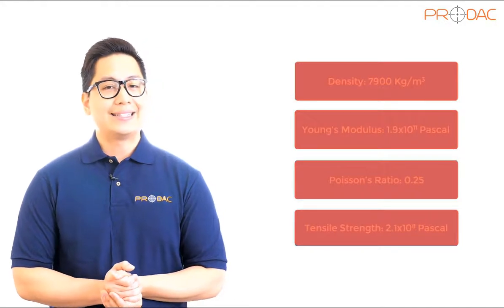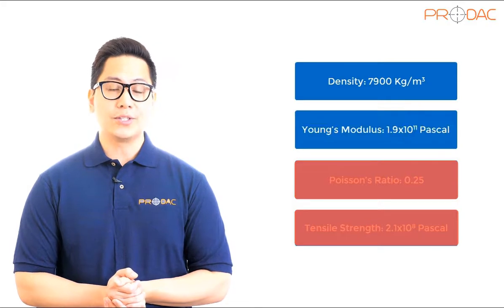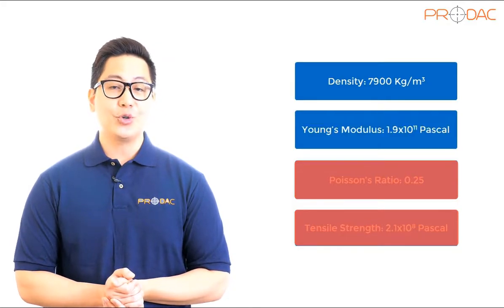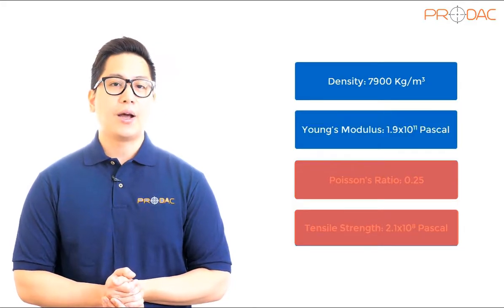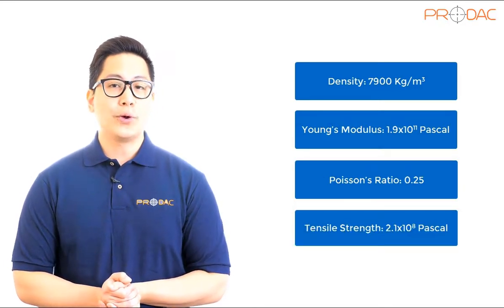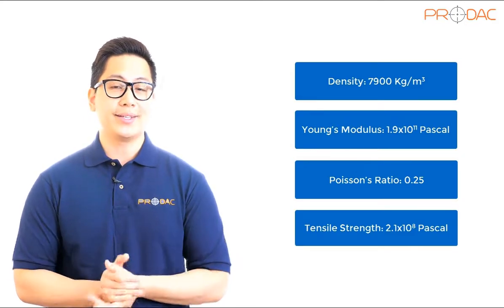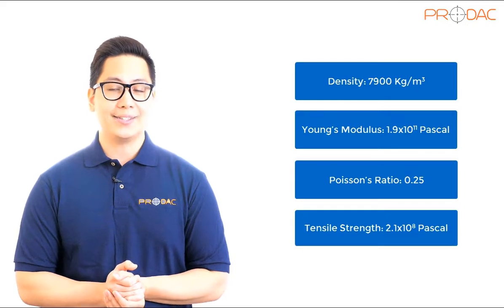In this video, you will learn how to add steel material and its properties to a part, and how to assign these properties on part geometry. The properties we are going to assign on steel material are: density — 7,900 kilograms per meter cube; Young's modulus — 1.9 × 10¹¹ Pascal; Poisson's ratio — 0.25; and tensile strength — 2.1 × 10⁸ Pascal. All these properties will be assigned to the existing project named AN003.